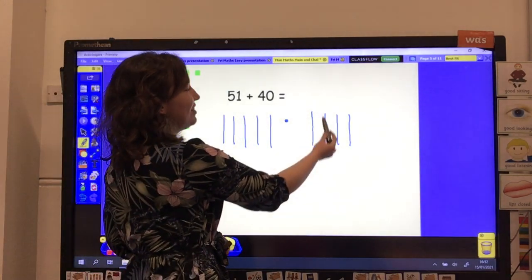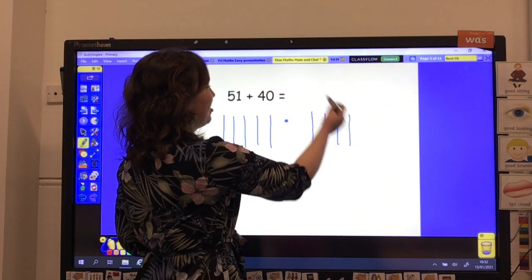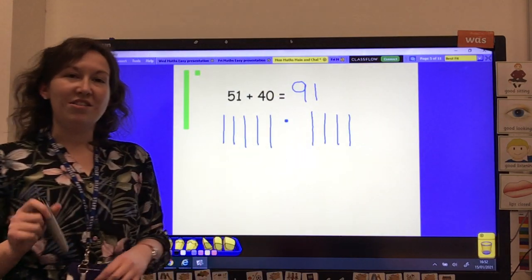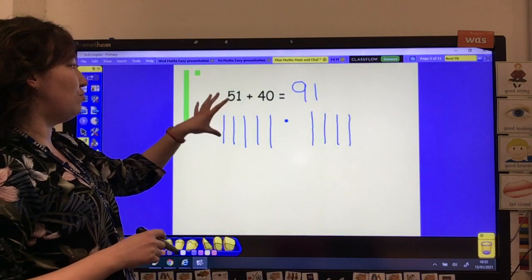Then can we count on the next set of 10s? So 51, 61, 71, 81, 91. There are 91 all together.